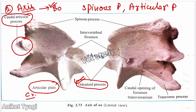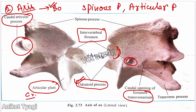The intervertebral foramen is present behind the notch. The foramen transversarium is narrow in the axis. The transverse processes are undivided and projected backward.